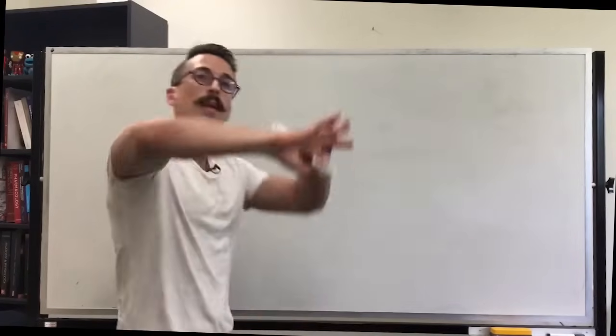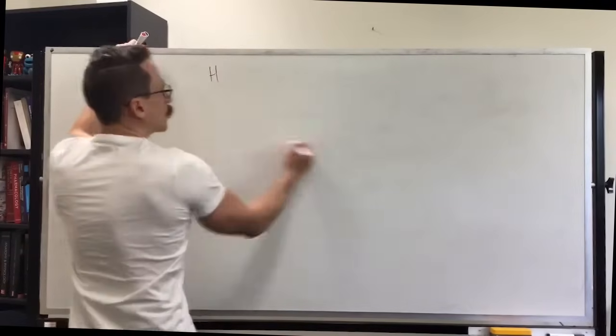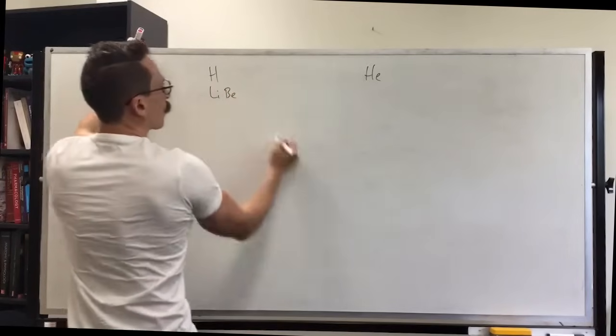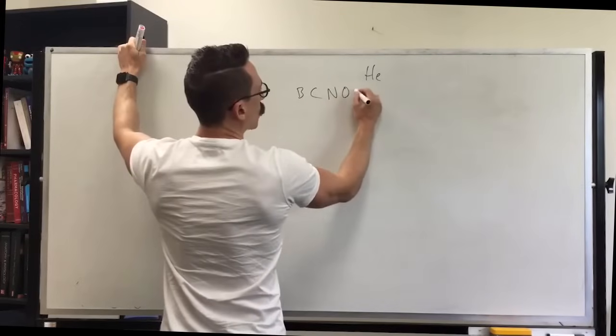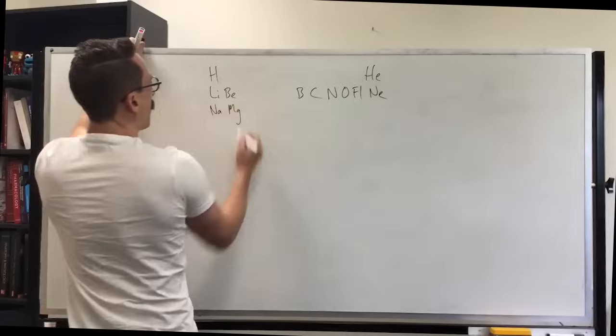First thing is we need to look at magnesium in the periodic table with all the other atoms and elements. So we have hydrogen, helium, lithium, beryllium, boron, carbon, nitrogen, oxygen, fluorine, neon, sodium, magnesium.